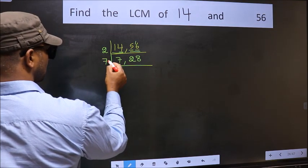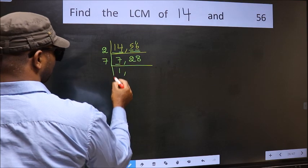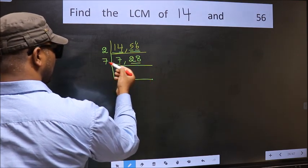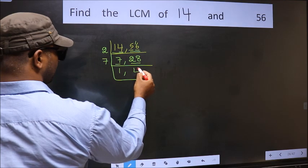7 is a prime number, so 7 times 1 is 7. The other number is 28. When do we get 28 in 7 table? 7 times 4 is 28.